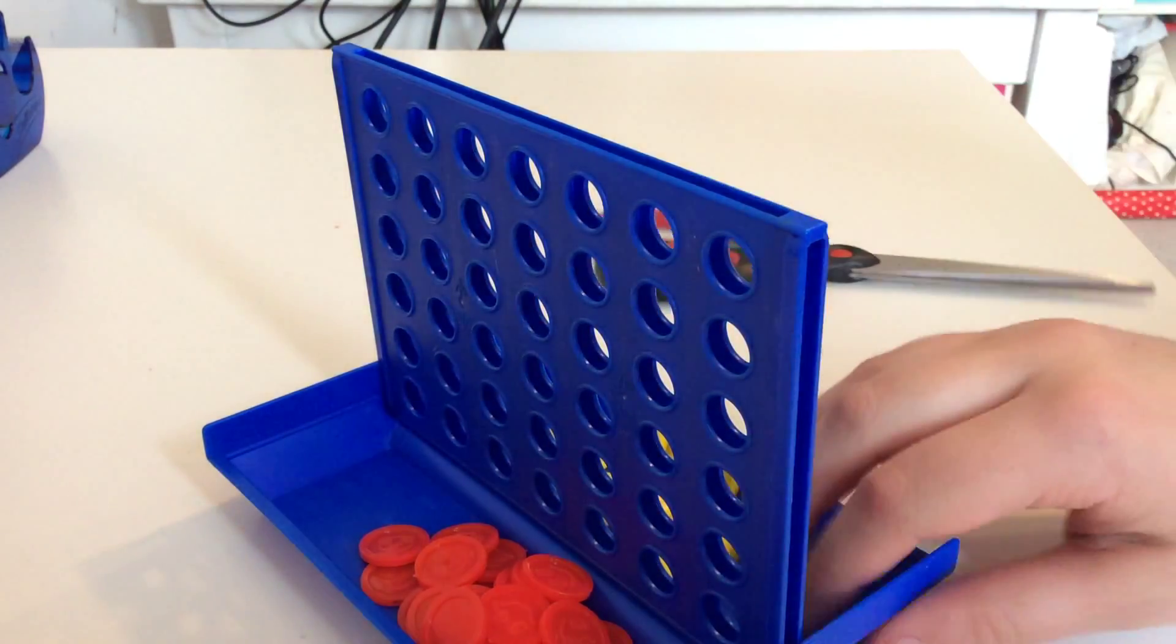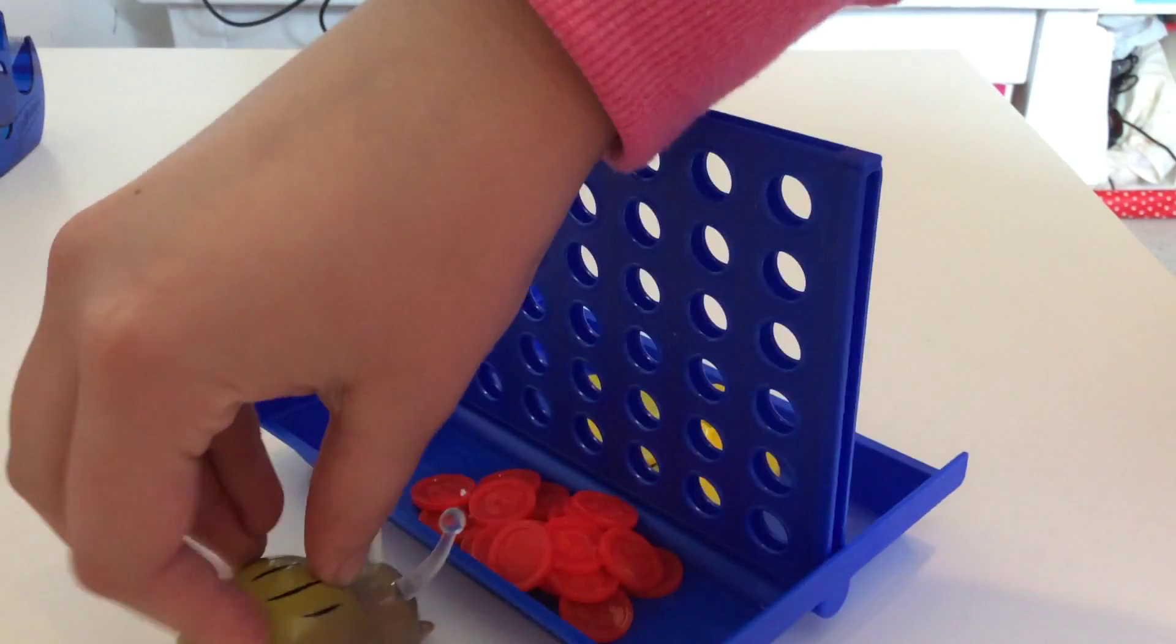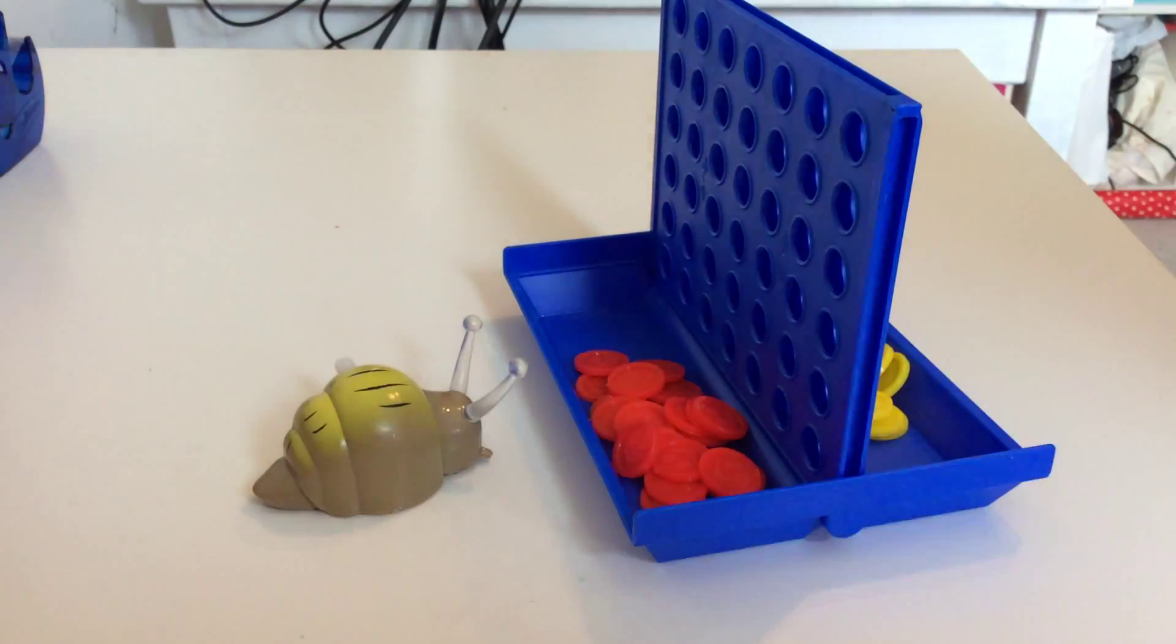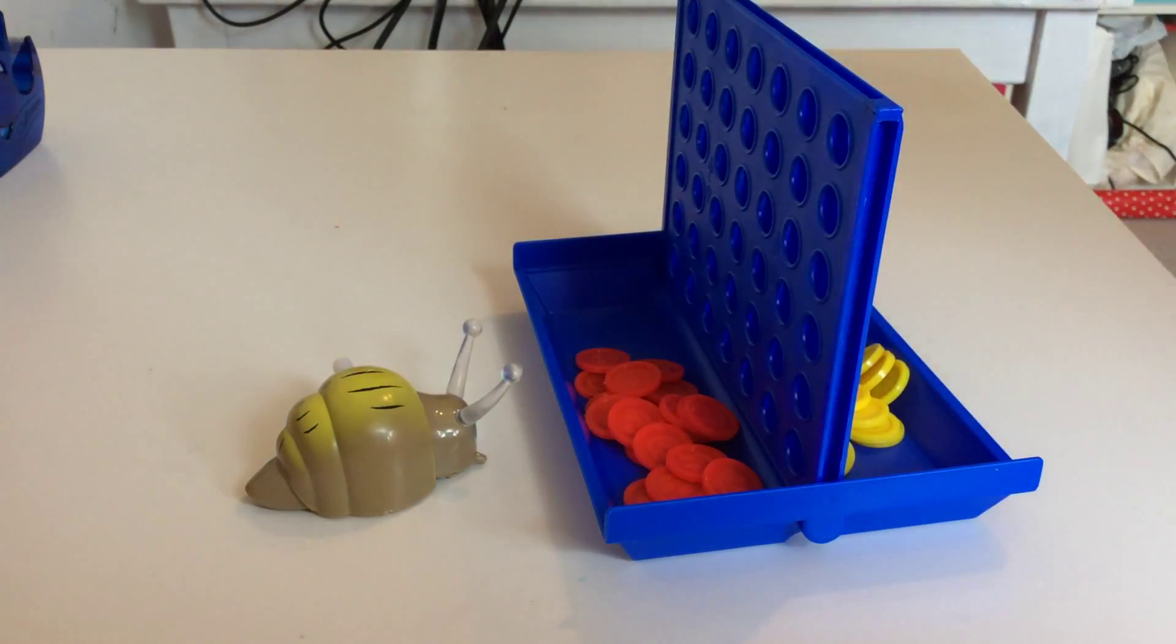So now we're going to need someone to play with. Snail has come to play. Snail will be red and I will be yellow. So let's start. Snail is going to choose to put his counter.